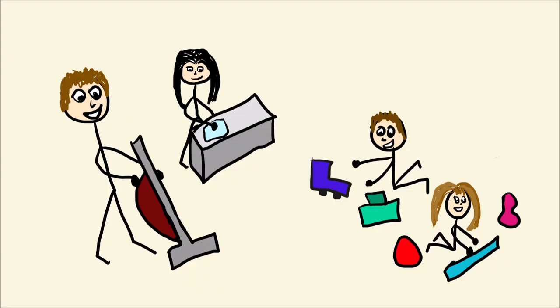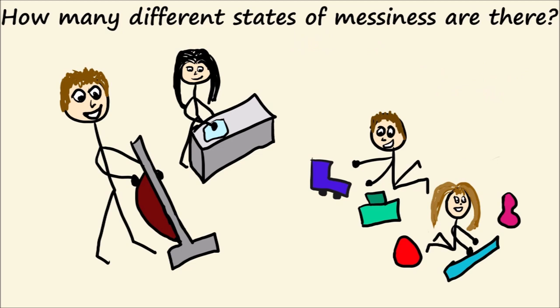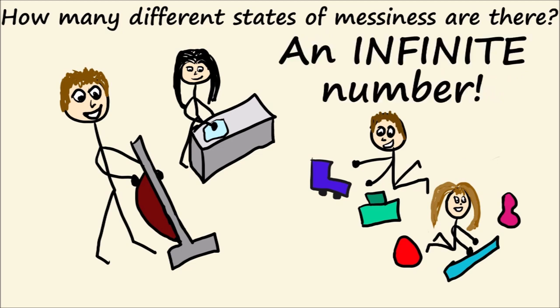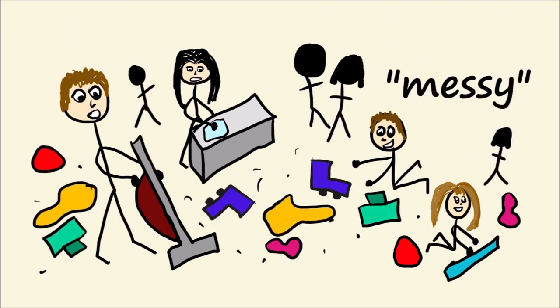When we clean up our room, we put it into a particular state that we call clean or tidy. This is just one of many possible outcomes, or more depending on how you define clean. But how many different states of messiness are there? An infinite number! There's only one way that we can tidy our room, but to mess it up, there are literally millions and billions of possibilities.